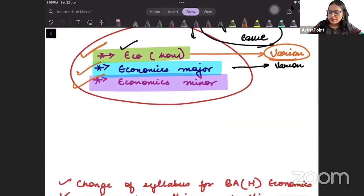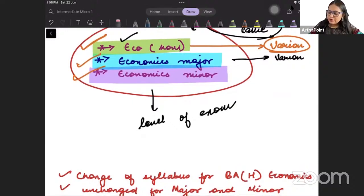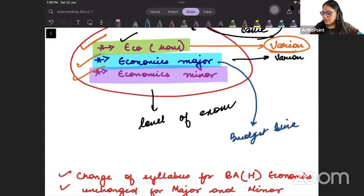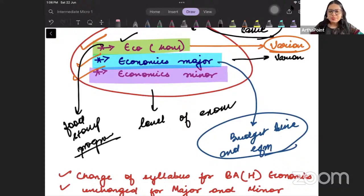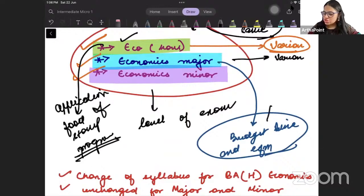The only thing that will differ will be the level of exam. For example, anyone from economics major may be asked to write the equation of budget line and find equilibrium. But anybody from economics honours may be asked about a food stamp program. This is an application of budget line, and this is a straightforward question on budget line. Both of them will be taught budget line from Varian chapter 2, but the level of the paper can be different. We will look carefully at what will be the level of exam. Don't worry, I will show you that also.